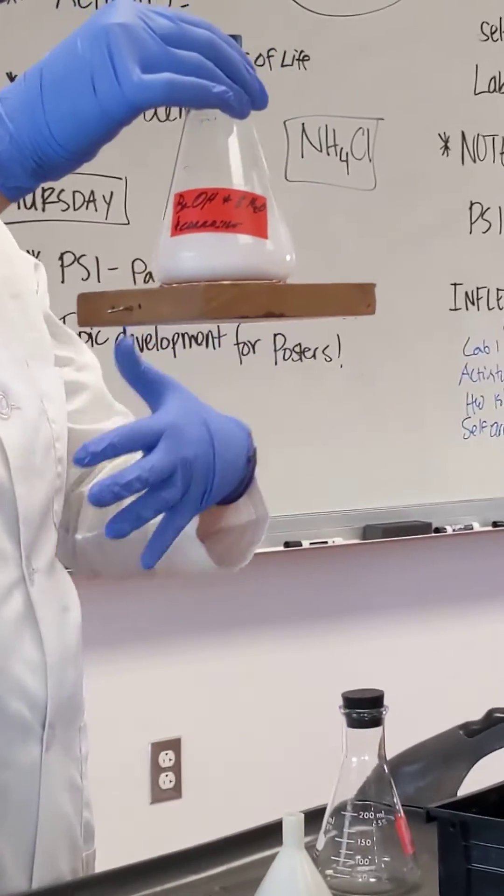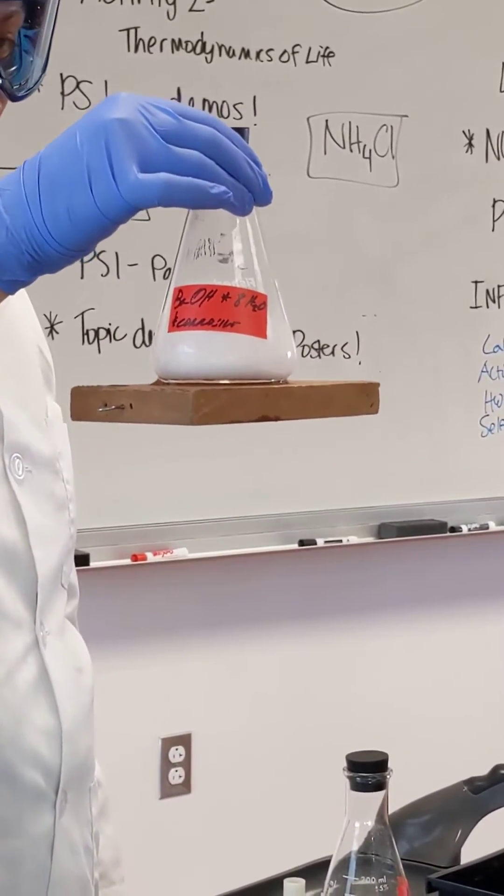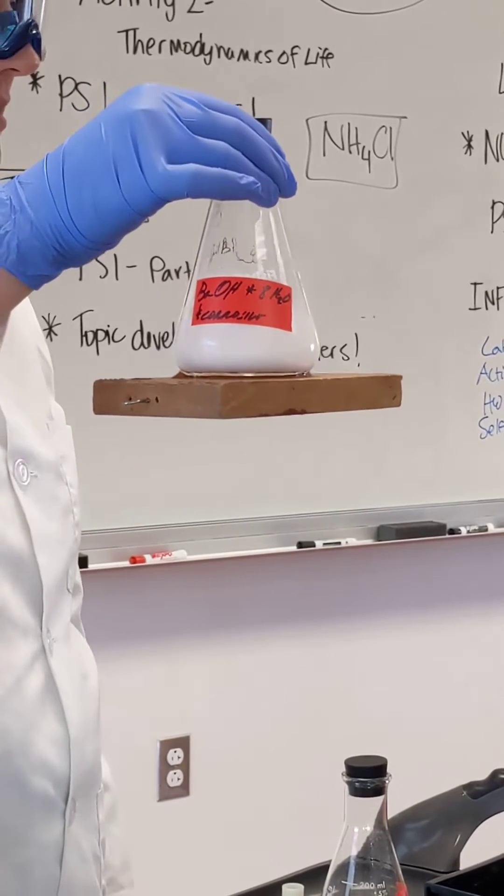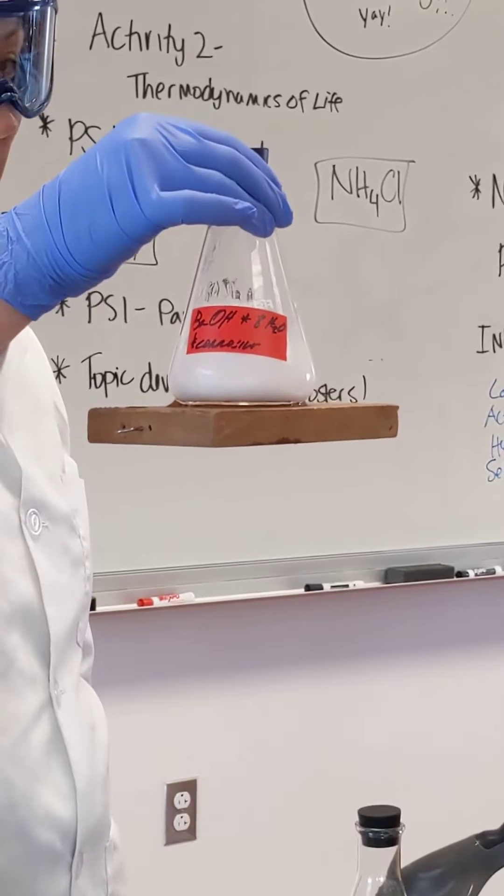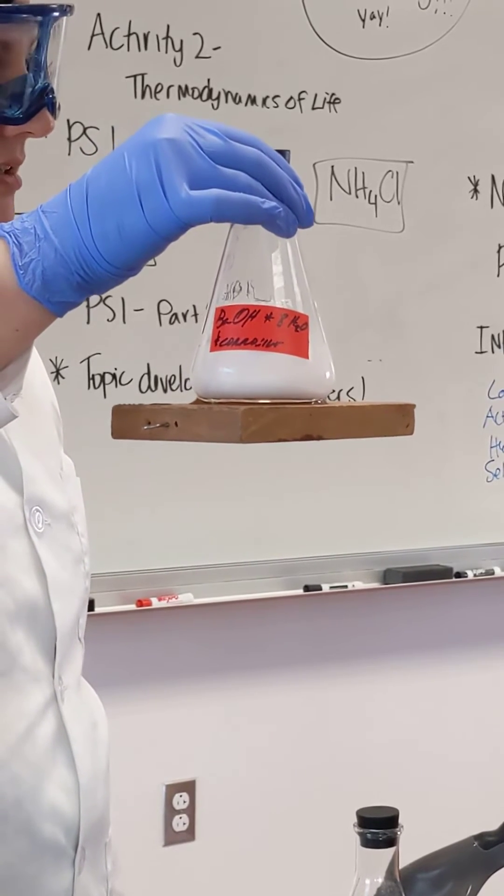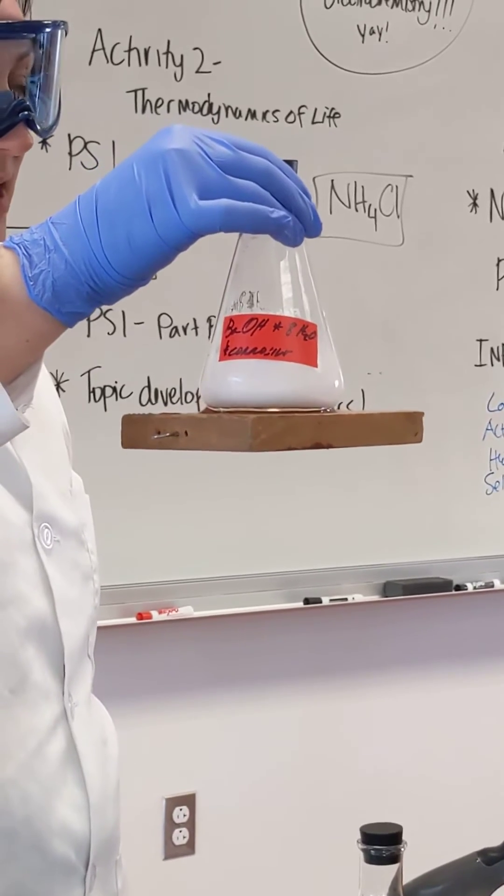So what's happening here is this solution has frozen the puddle of water that the flask was placed in as those solids combined. We froze the water, and now the wood is stuck to the beaker.